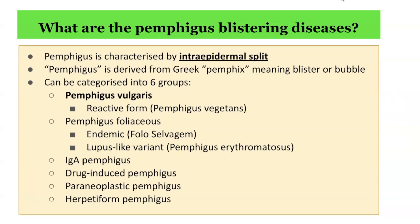In terms of Pemphigus foliaceus, there are two variants, including the endemic form also known as Fogo selvagem, as well as a lupus-like variant also known as Pemphigus erythematosus.